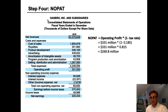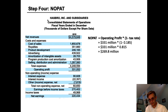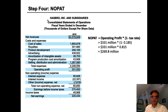Finally, we have all the values needed to calculate NOPAT, or net operating profit after tax. The formula is: operating profit multiplied by (1 minus the tax rate). For Hasbro, operating profit was $331 million and the tax rate was 18.5%, so it's $331 million times 0.815, which gives us NOPAT of $269.8 million.